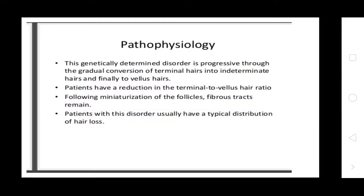Pathophysiology of Alopecia. This genetically determined disorder progresses through the gradual conversion of terminal hairs into vellus hairs. Patients have a reduction in the terminal to vellus hair ratio. Miniaturization of the follicles occurs and fibrous tracts remain. Patients with this disorder usually have a typical distribution of hair loss.